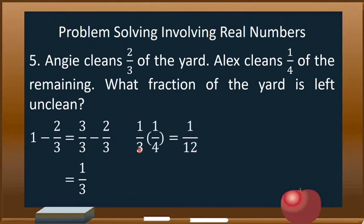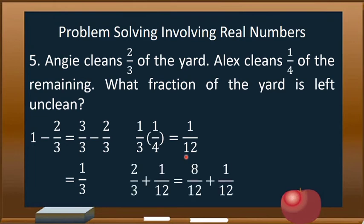Now we multiply 1/3 by 1/4, since that is the part Alex cleans. 1 times 1 equals 1 and 3 times 4 equals 12, so Alex cleans 1/12 of the yard. To get the total fraction cleaned, we add 2/3 for Angie and 1/12 for Alex. The LCD is 12, so the equivalent of 2/3 is 8/12. Then 8/12 plus 1/12 equals 9/12.